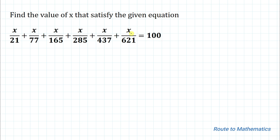We are asked to find the value of the variable x from this given equation. Without any delay, let's start the solution. Here we have x/21, which is nothing but x divided by 3 multiplied with 7.